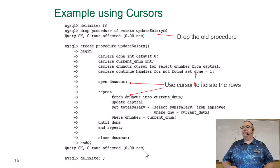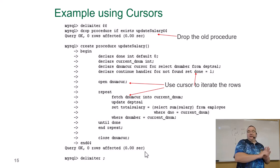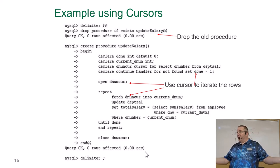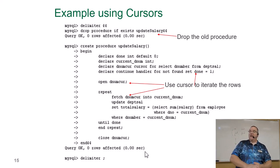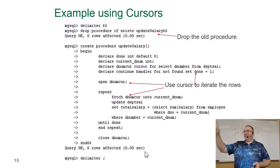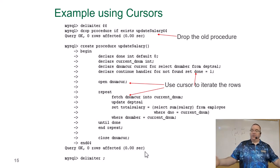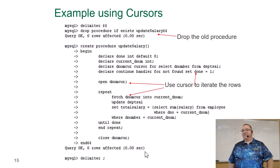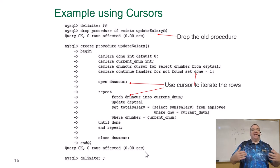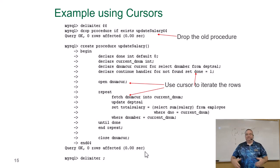We declare a CONTINUE HANDLER FOR NOT FOUND SET done = 1. So you loop through the rows, and when it runs out of rows, normally the procedure would blow up and die. This handler says: when it fails, set the variable done to one — it's a try-catch. It's a stupid way of doing it. Other databases like Postgres and Oracle let you do a proper while-fetch loop with a for-each. In MySQL you actually have to put a handler saying: when you run out of rows, don't crash — instead set this variable to one to say we're finished.